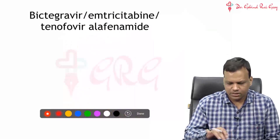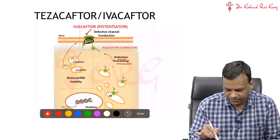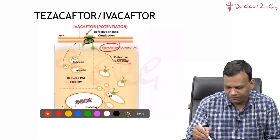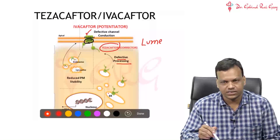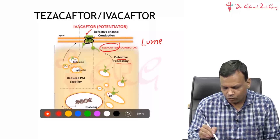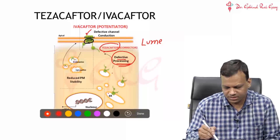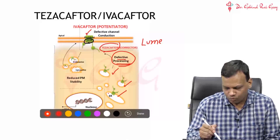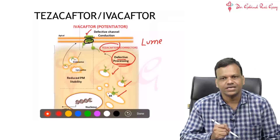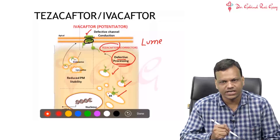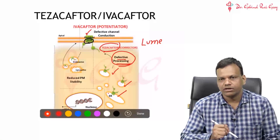We have made two types of drugs. The first type is Tezacaftor — previously we also had Lumacaftor in the same category. These are called CFTR correctors. Correctors means these drugs improve the processing of CFTR, so that more CFTR comes to the surface of the cells. Basically, they increase the number of chloride channels on the surface. Tezacaftor and Lumacaftor are both correctors.